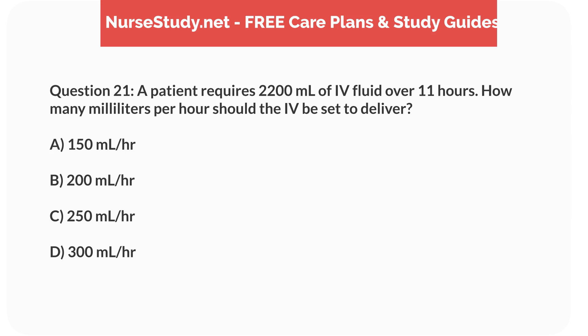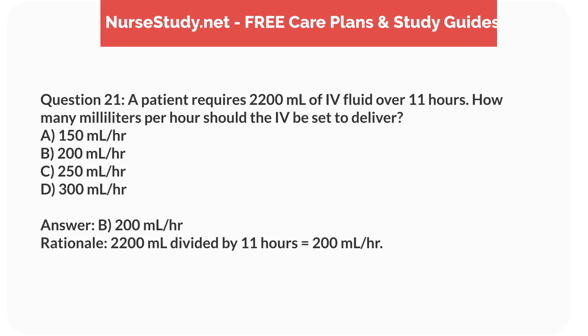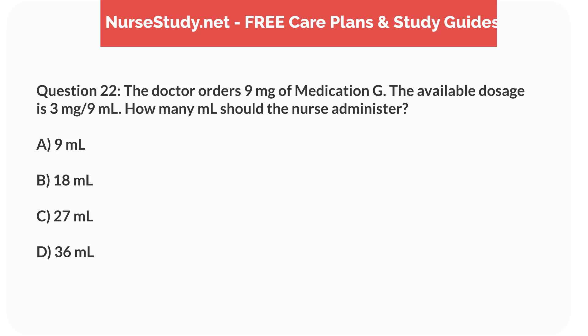Question 21. A patient requires 2,200mL of IV fluid over 11 hours. How many mL per hour should the IV be set to deliver? a. 150mL per hour, b. 200mL per hour, c. 250mL per hour, d. 300mL per hour. Answer: b. 200mL per hour. Rationale: 2,200mL divided by 11 hours equals 200mL per hour.